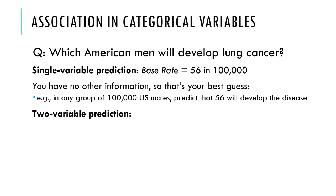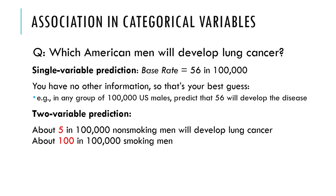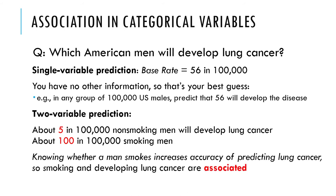If you add another variable that's actually associated with the first variable, that can help you predict. Smoking is one of the better predictors of lung cancer. About 5 in 100,000 non-smoking men will develop lung cancer, but about 100 out of every 100,000 smoking men will develop lung cancer. That's a big difference. So if someone asks what's their probability of developing lung cancer, you can say, it depends — are you a smoker or not? Knowing whether somebody smokes helps you predict whether they'll get cancer. So those two things are associated.